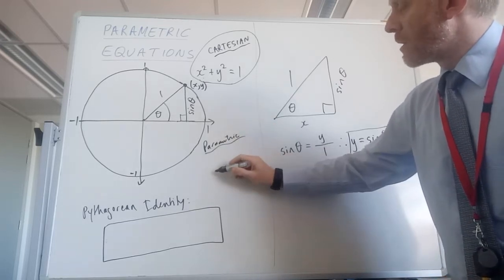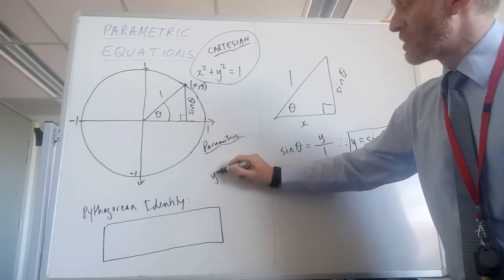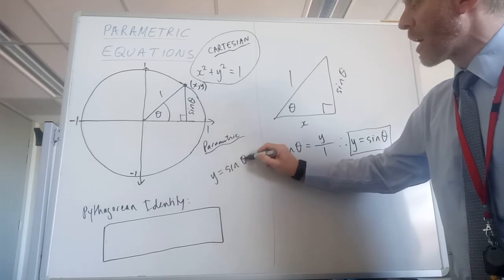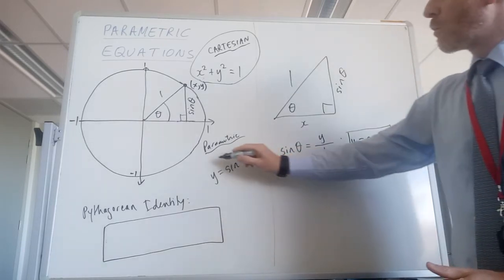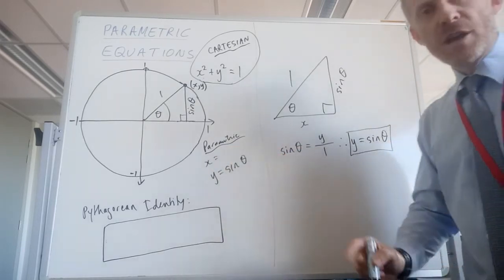The parametric equations of this circle, there's going to be two of them. We've actually done the second one first, and it's y equals sine theta. We now need an x parametric equation.